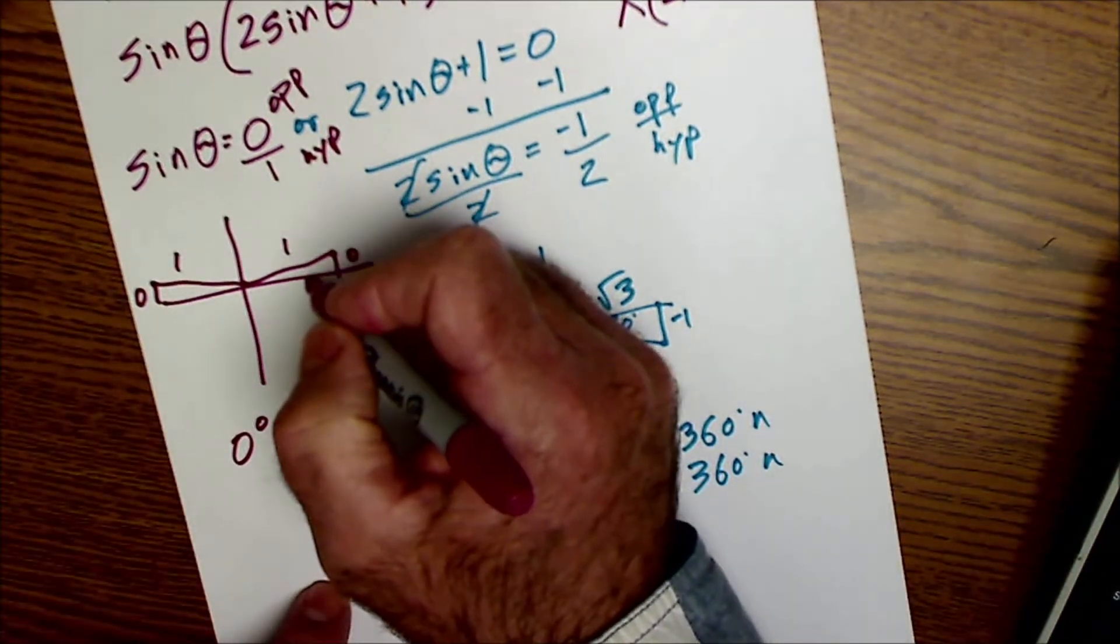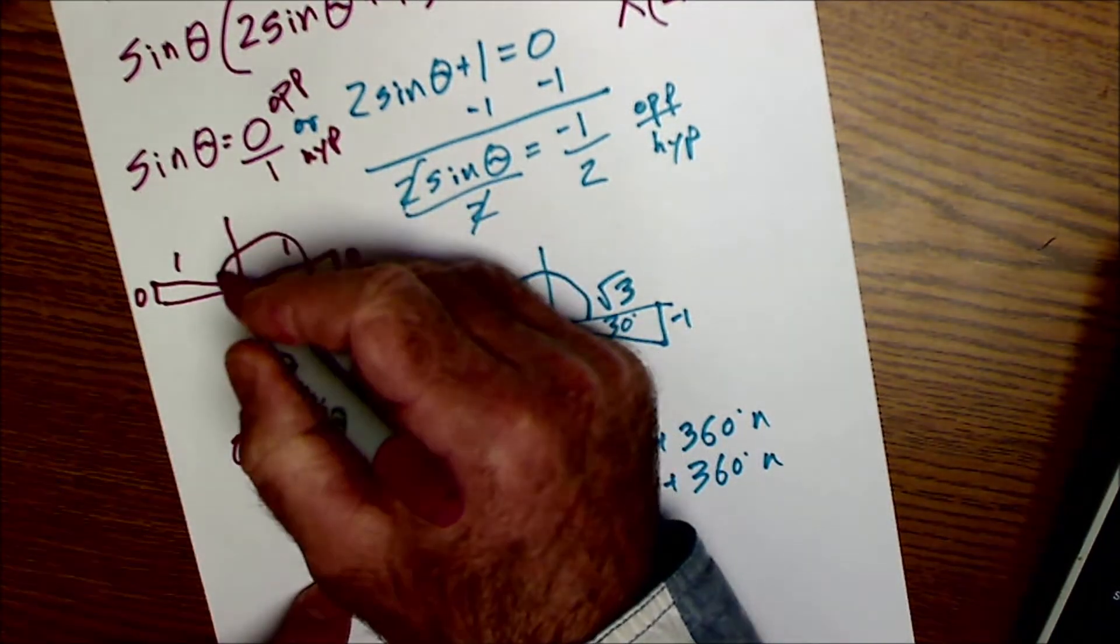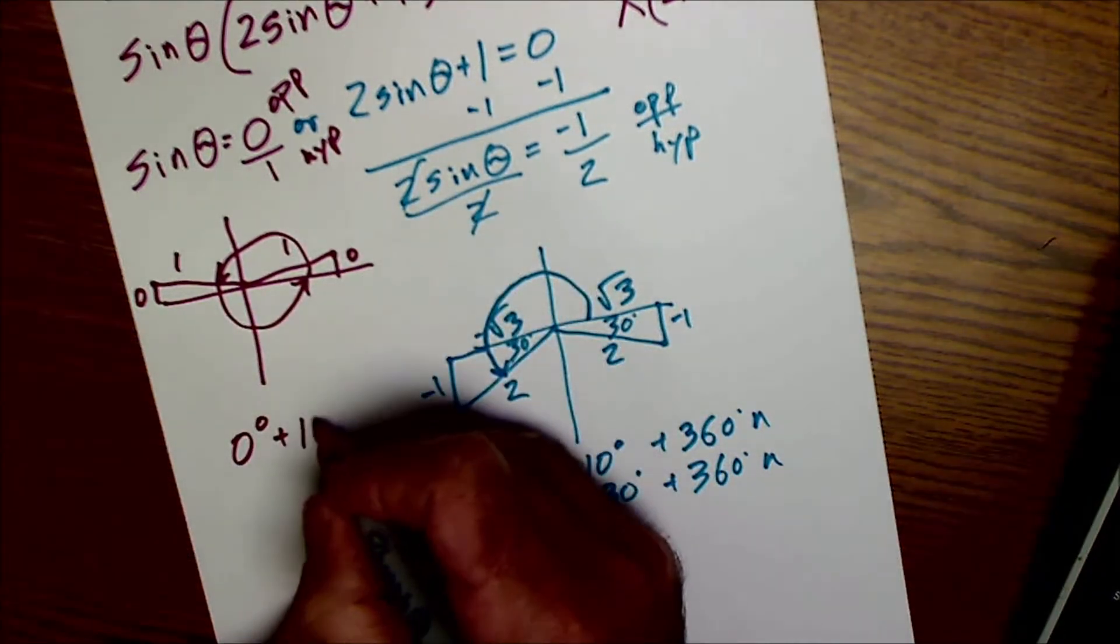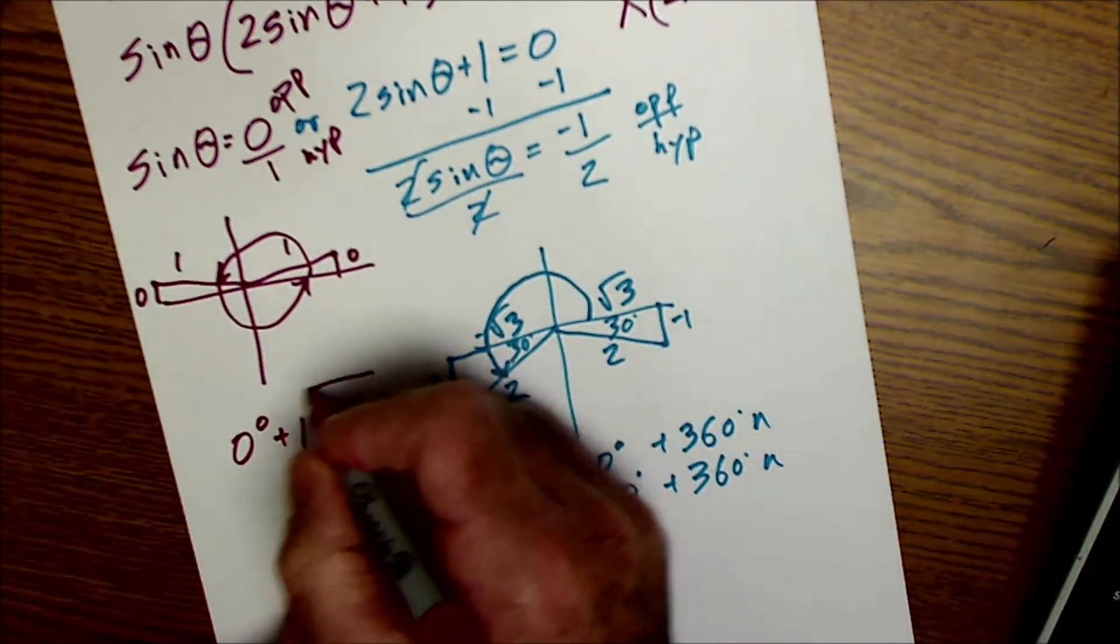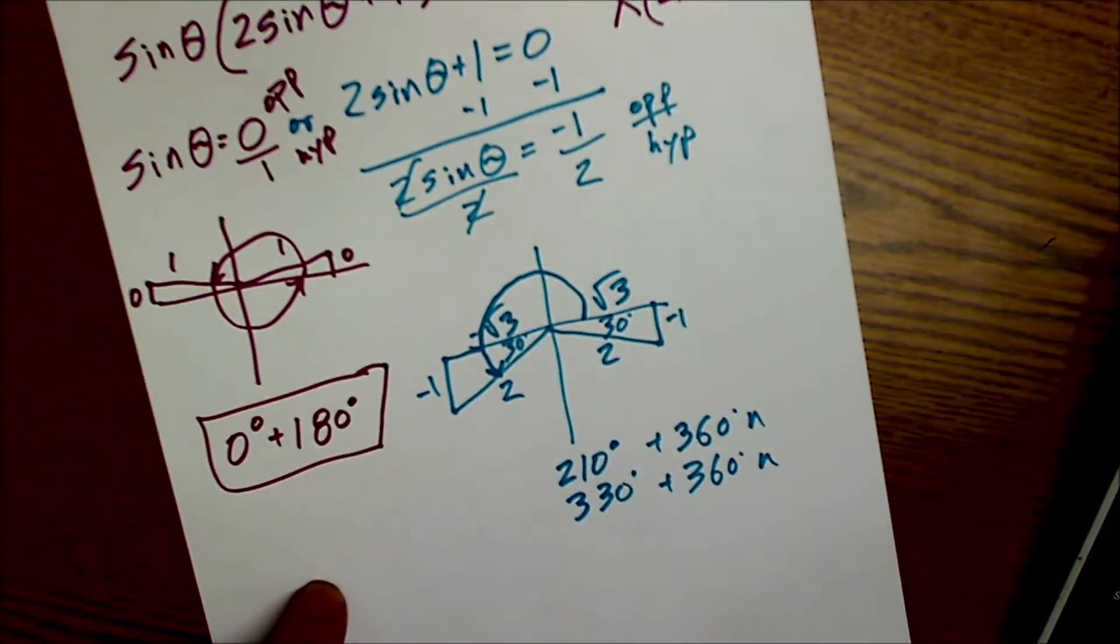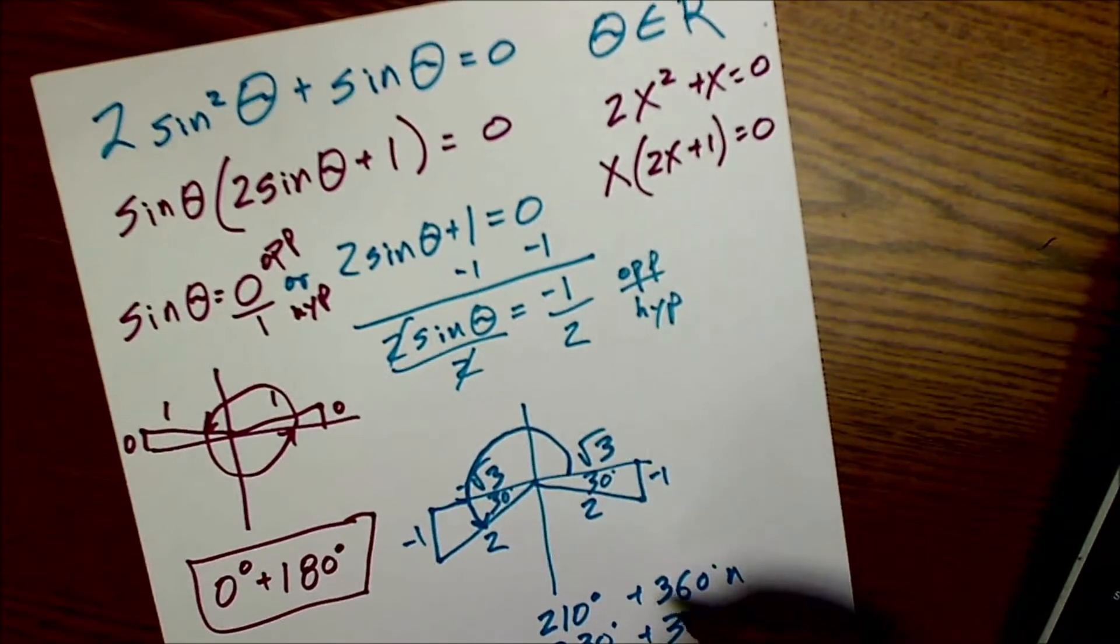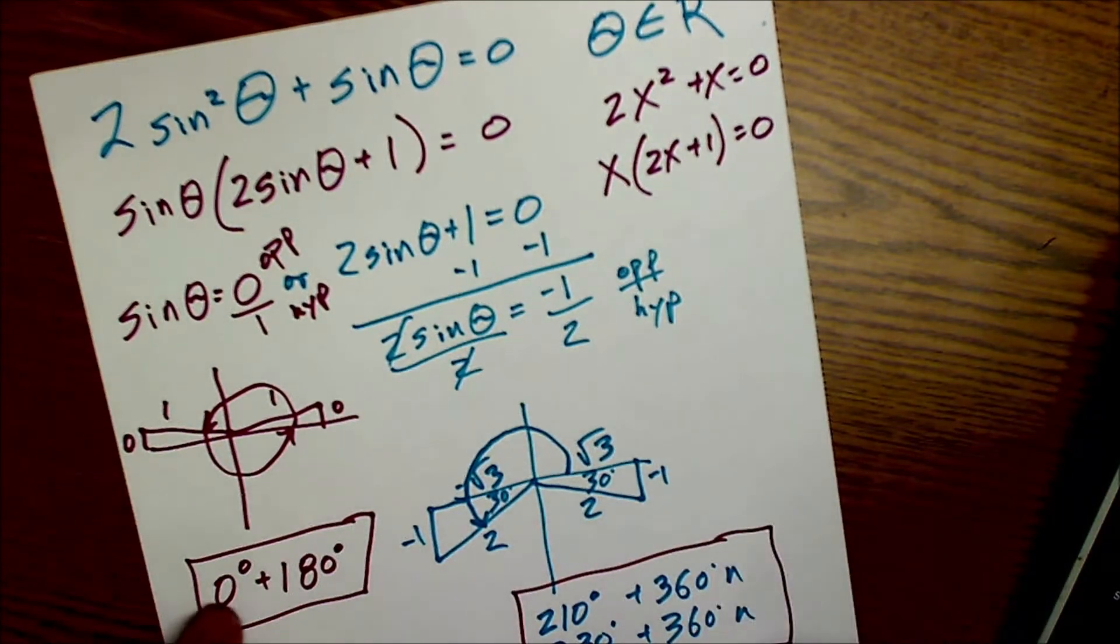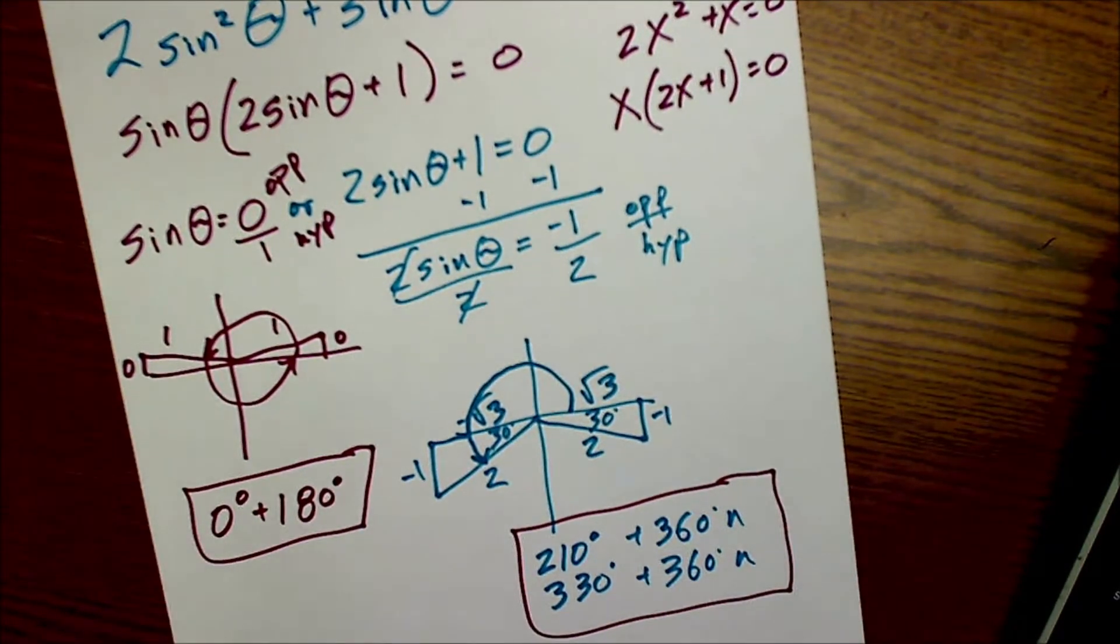Those will be 0 plus 360n and 180 plus 360n. But a more efficient way to write it is I could see it's going to repeat itself every 180 degrees. So this will cover all solutions. That will cover my 0, my 180, my 360. So my solution to this problem is all three of these series of answers.